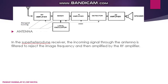The first block is the antenna. At the antenna, two functions are performed: interception and selection. It intercepts all incoming carrier frequencies, selects our desired frequency, and passes it through the RF amplifier.